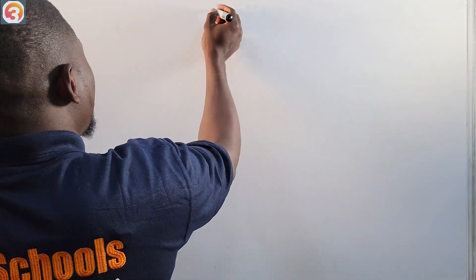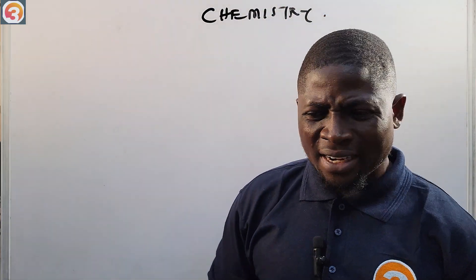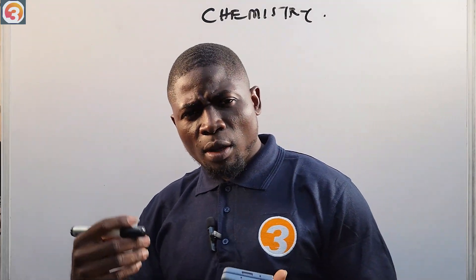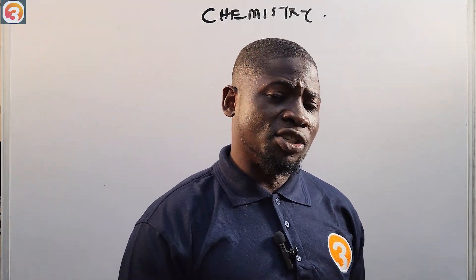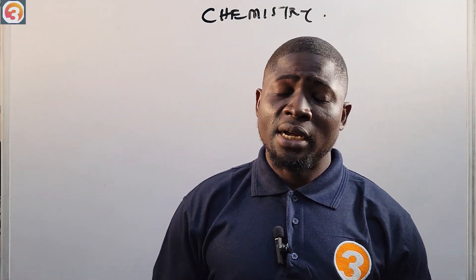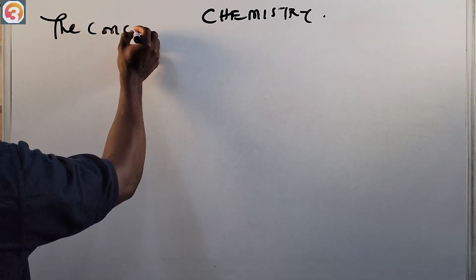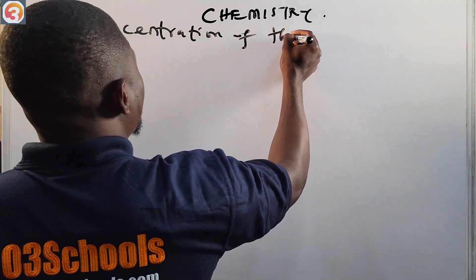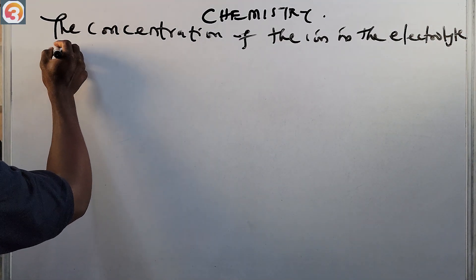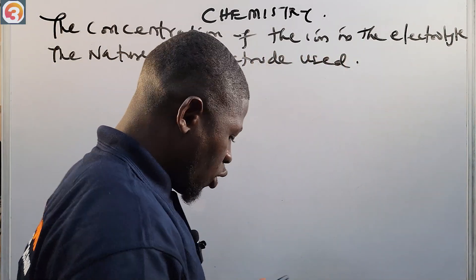Welcome back to another chemistry episode. Today we are looking at the two other factors that govern the preferential discharge of an anion during electrolysis. In the previous episode we looked at the position of the anion in the electrochemical series. Today we are going to look at the concentration of the anion in the electrolyte, and secondly the nature of electrode used.